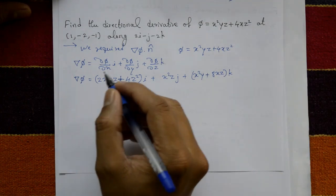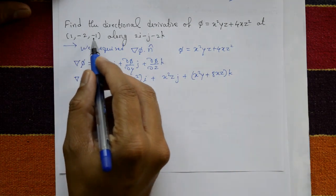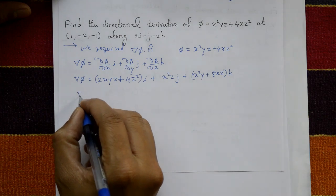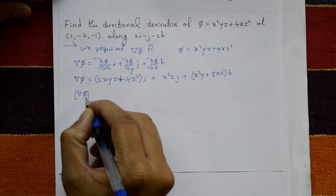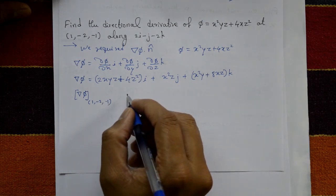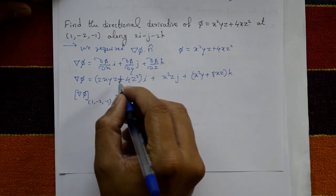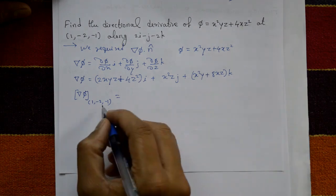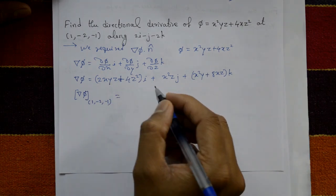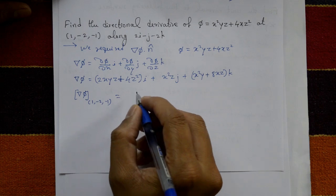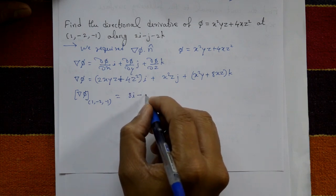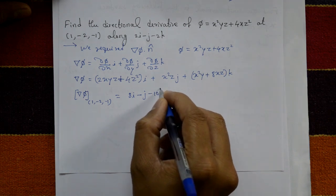This is del phi. Given the point (x, y, z) = (1, -2, -1), we substitute: putting x = 1, y = -2, z = -1 into the expression, del phi at (1, -2, -1) equals 8i minus j minus 10k.